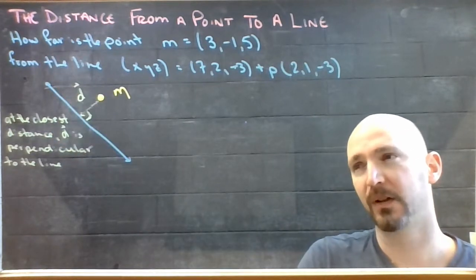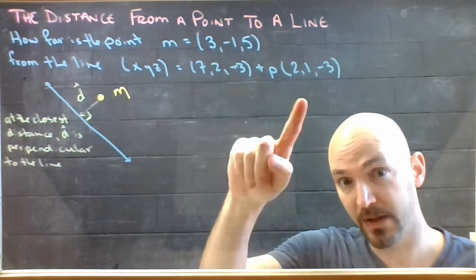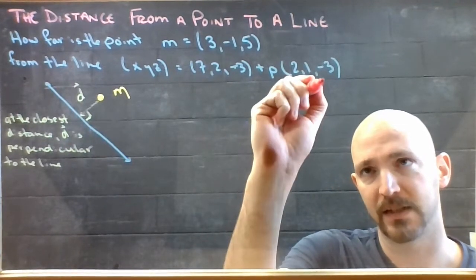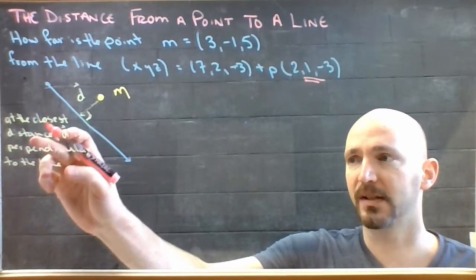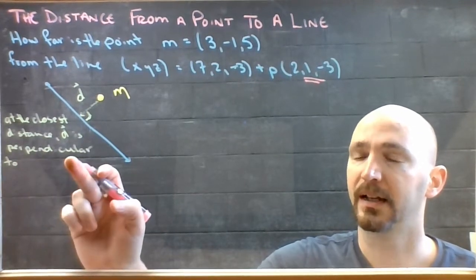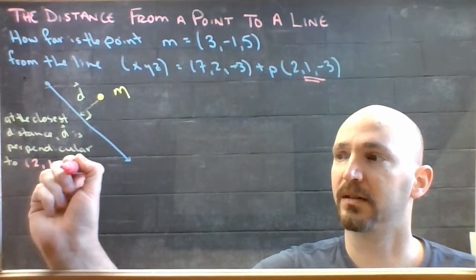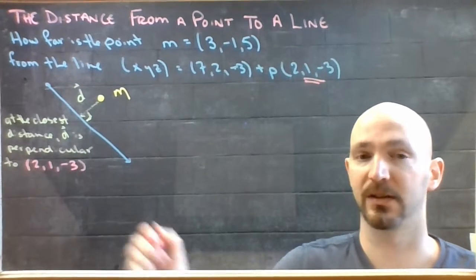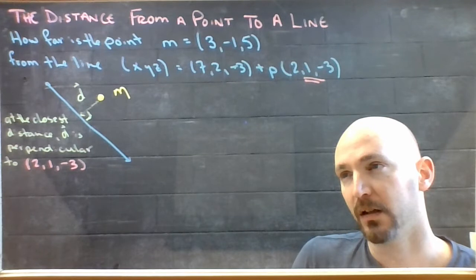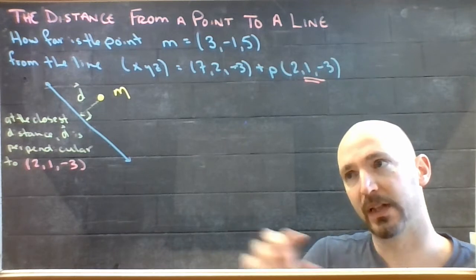In order to do that, I have to look at the equation of this thing and decide which of these pieces is causing the line to travel in that direction. And that's this piece here. So at closest distance, this vector is perpendicular to (2, 1, -3), because that is the direction that the line is traveling in.